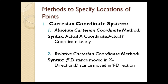There are certain methods with which you can specify locations or points in AutoCAD. Under the Cartesian coordinate system, there are two methods: one is the absolute Cartesian coordinate method, and the other is the relative Cartesian coordinate method. Both have different syntax.